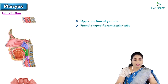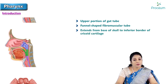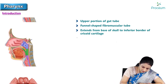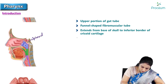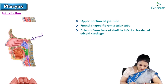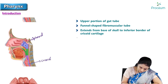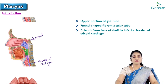The pharynx is a fibromuscular tube which is funnel in shape, and it extends from the base of the skull to the inferior border of the cricoid cartilage of the larynx.